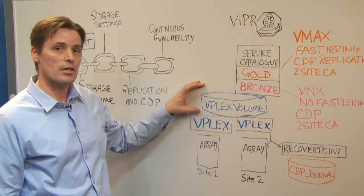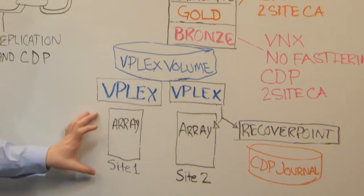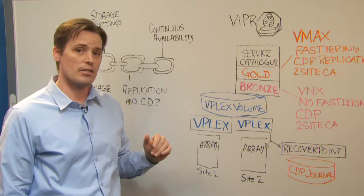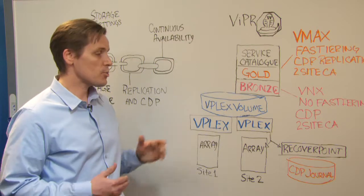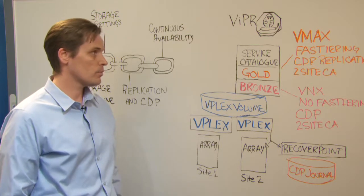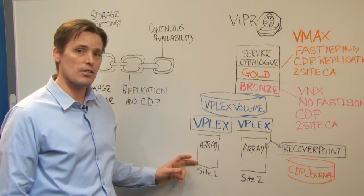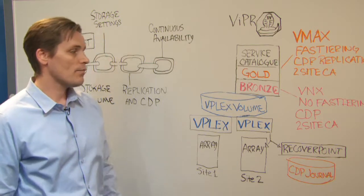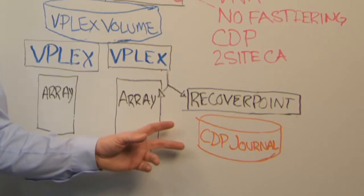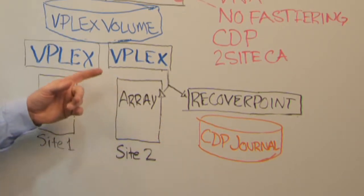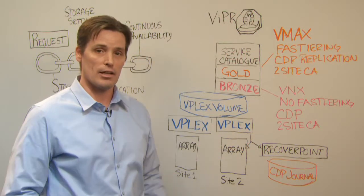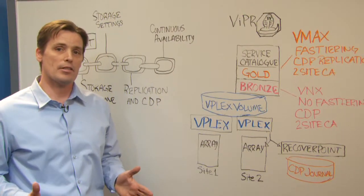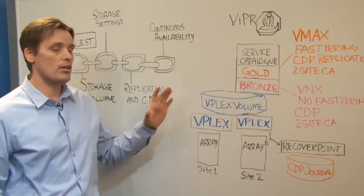Viper then instructs vPlex to take that application data and move it from the VNX arrays to the VMAX arrays. Because vPlex can do this process without disrupting host access to the application data — even during the move — this process can be done during work hours on production workloads. Viper then specifies the new storage settings on the array, including tiering, snaps and clones, and any other provisioned elements. Finally, Viper instructs RecoverPoint to map the CDP volume for continuous replication to the new array location, continuing to provide that continuous data protection. This is all done in just a matter of steps, in just a matter of minutes, eliminating the risk of human error, and done non-disruptively.